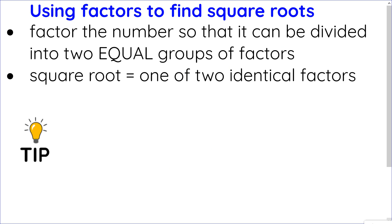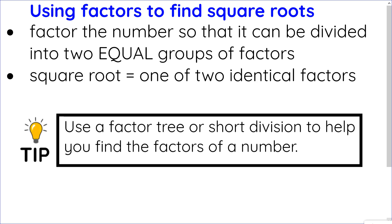Let's talk about how we can find square roots. We can use our factors to help. Aside from using the calculator, let's try without it first. Factor the numbers so they can be divided into equal groups of factors. You don't have to go all the way to prime factorization, just until you can comfortably say there are equal numbers of factors in each group, because the square root is one of those identical factors. I recommend using a factor tree or short division.